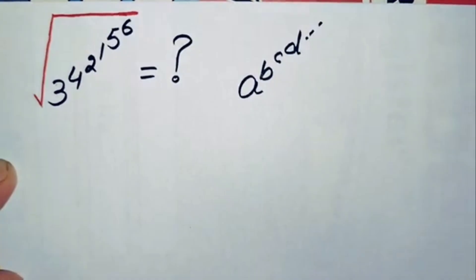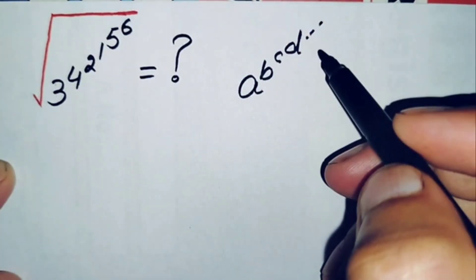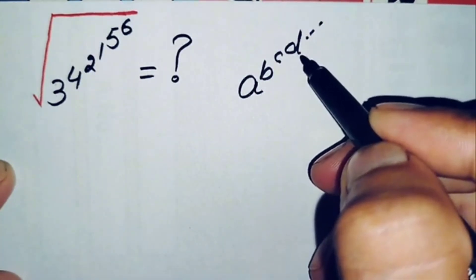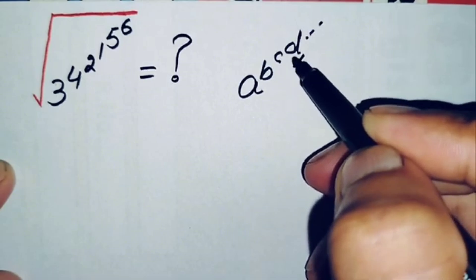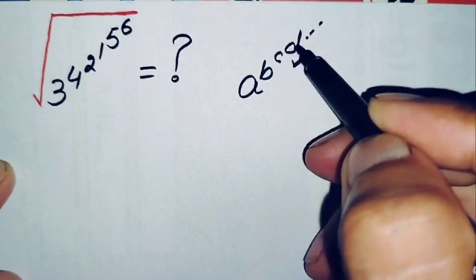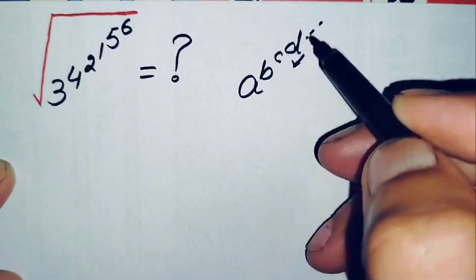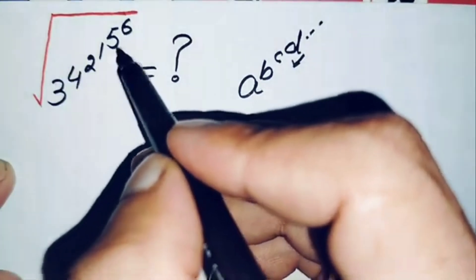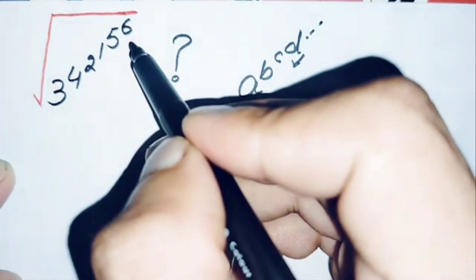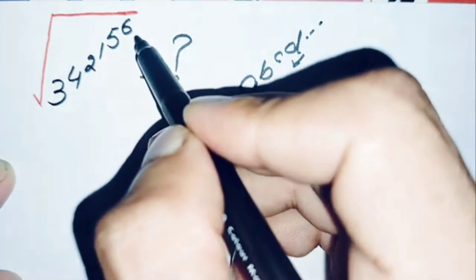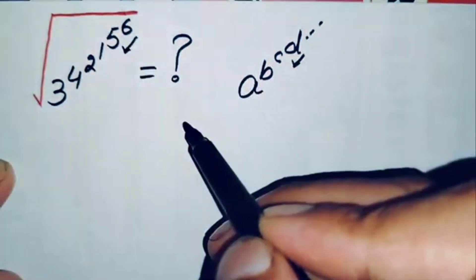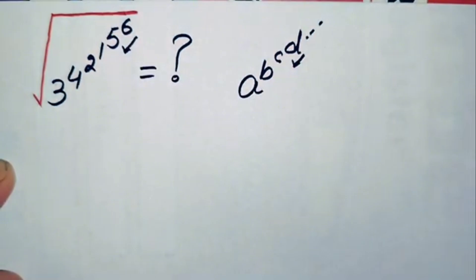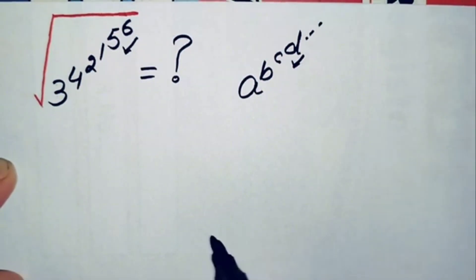If we have a number in this form, we solve the powers from the top to bottom. So we will first solve 5 raised to power 6, starting from the top.